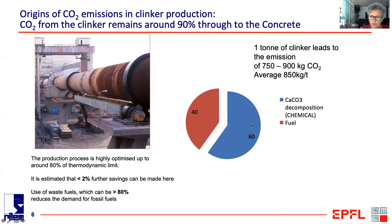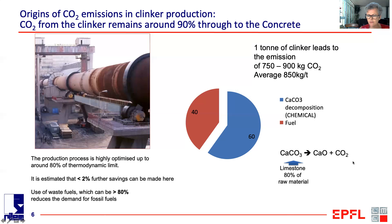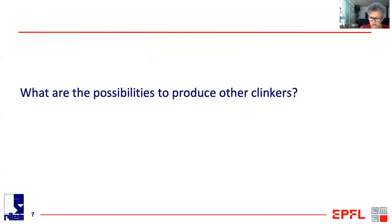The majority of the emissions — 60% — come from this chemical equation: limestone makes up about 80% of the raw material for cement, and the first stage in production is the breakdown of calcium carbonate into calcium oxide and CO2. That's where the majority of the CO2 emissions come from, and we can't solve that problem by, for example, using renewable energies.